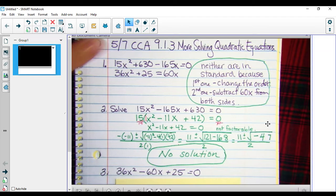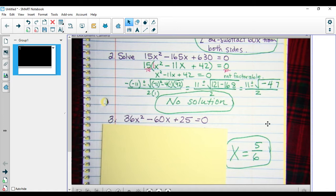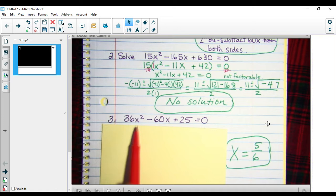And then the second equation that we needed to solve, I noticed right off the bat that 36 and 25 are perfect squares. So I'm wondering if this is a perfect square trinomial. 6 squared, 6x squared gives me 36x squared. 5 squared gives me 25.